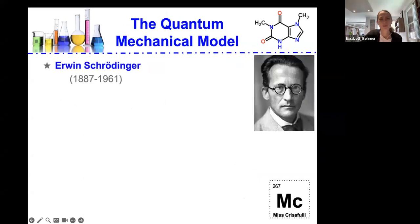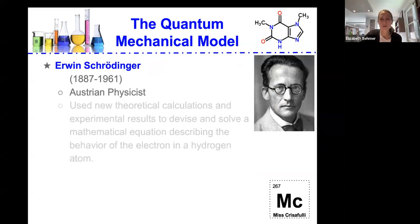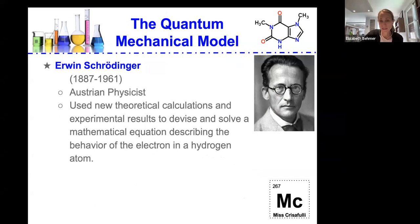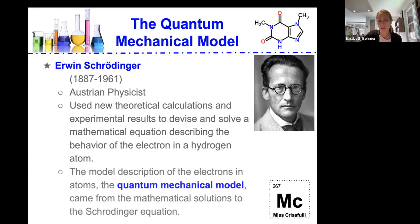Erwin Schrödinger was an Austrian physicist, and he used new theoretical calculations and experimental results to devise and solve a mathematical equation describing the behavior of the electron in a hydrogen atom. The model description of the electrons in atoms was called the quantum mechanical model, and it came from mathematical solutions to the Schrödinger equation.